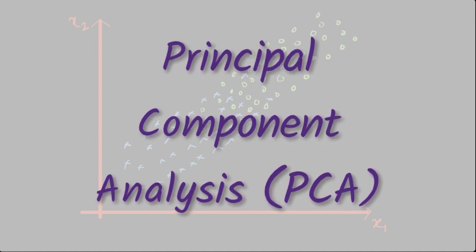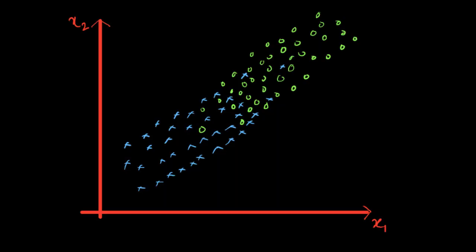Before getting into principal component analysis details, let's try to get an intuitive understanding of what this algorithm is all about. Let's say you have a classification problem where you have two input variables, x1 and x2. This is a two-dimensional problem and your final output belongs to two categories — one represented by blue crosses and one by green circles. When you want to reduce your dimensions, your objective of using PCA is to reduce the number of dimensions without making a huge dent in your classification accuracy.